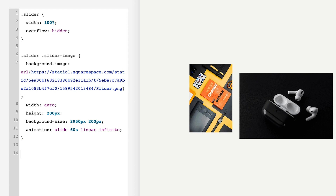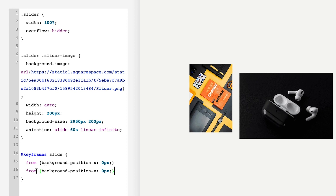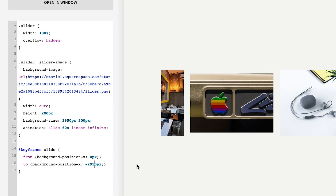All we need to do now is add the keyframe to start the image moving. On a new line add: @keyframes slide — slide needs to exactly match the animation name we put in above, otherwise this won't work. Open curly brackets, then inside add: from, open curly brackets, background-position-x: 0px;. Copy that and paste it directly below, then change 'from' to 'to' and change 0px to -2950px — minus the width of the background-size from above. And there we go, we've got our slider sliding.